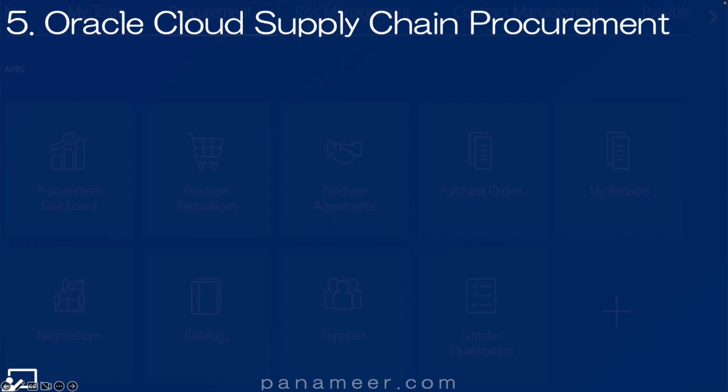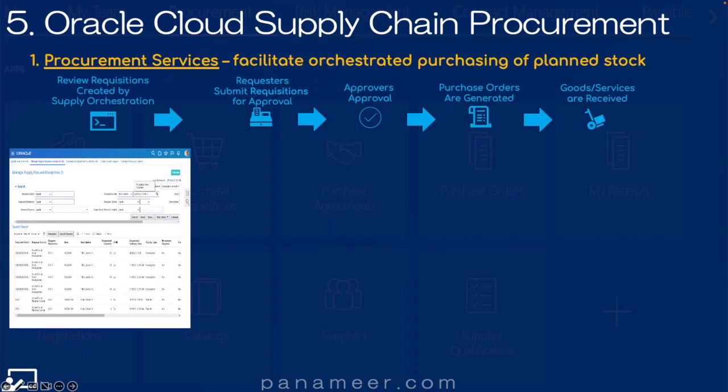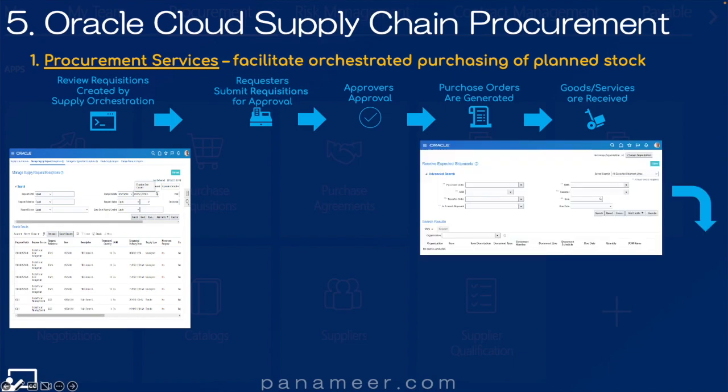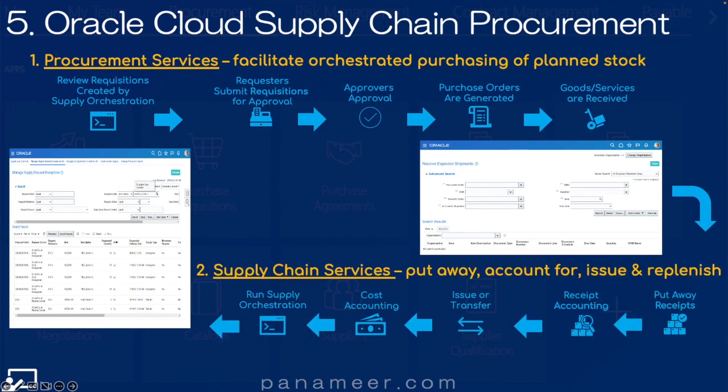Slide five: Oracle Cloud Supply Chain Procurement Process. Let's walk through the procurement process in two simple steps. Step one: purchasing services are performed and stock has been received. Step two: the supply chain services are performed.